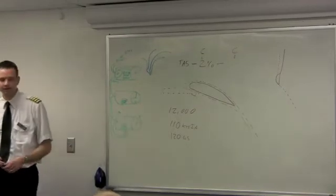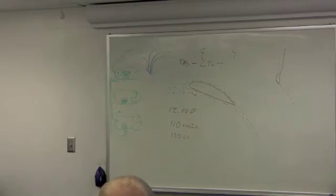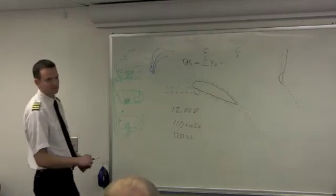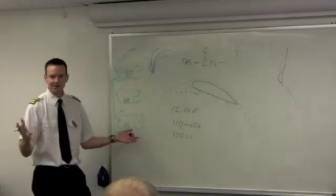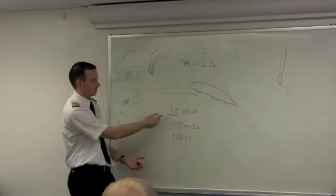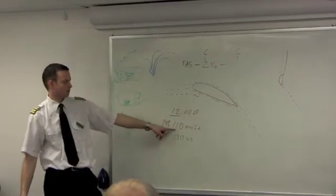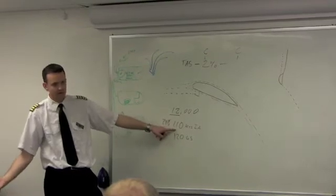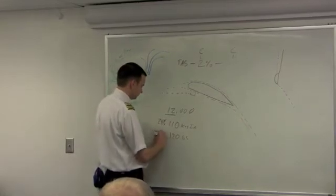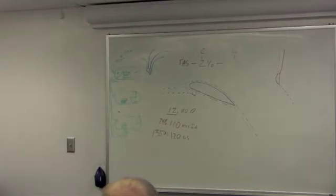And my ground speed's 120. Oh, got a headwind or a tailwind? Tailwind. 2% per 1,000 feet. 24, so 2 times 12, it's going to be 24% increase. So I'm going to write about 100, so 24% of that's going to be like 25. What's 110 plus 25? 135, true airspeed. I got a 15-knot headwind.